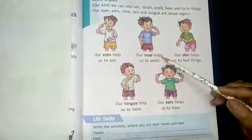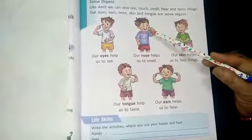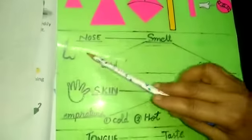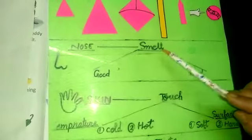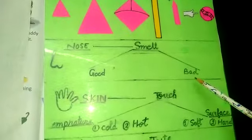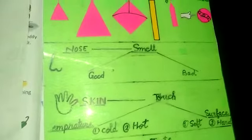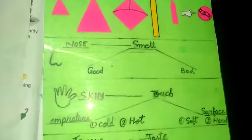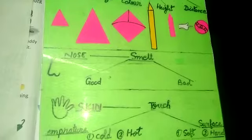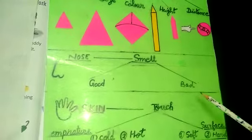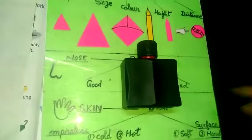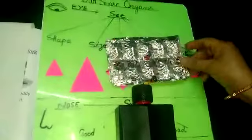Our nose helps us to smell. Nose हमारे को smell के बारे में बताती है. Nose tells us the smell, and smell is of two types: good and bad. The smell which comes from agarbatti, flowers and perfumes, that is a good smell. But the smell which comes from the drain pipe and from food which is fungus infected, that is a bad smell. For example, this perfume has a good smell, but the tablets have a bad smell. So these are the two types of smells.